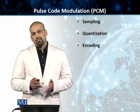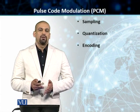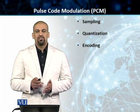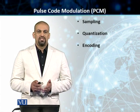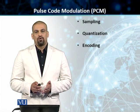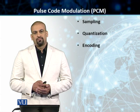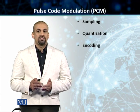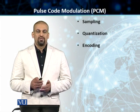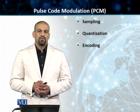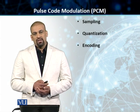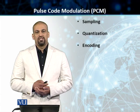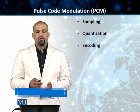Students, the major component of a PCM system is the PCM encoder. There are three distinct processes that a PCM encoder performs. The first one is sampling, the second one is quantization, and then we have encoding.